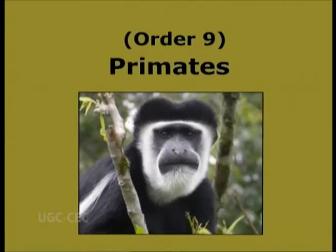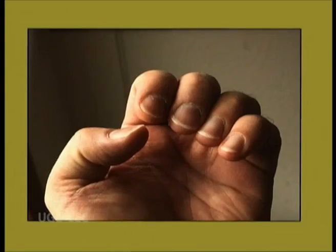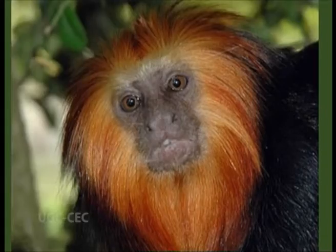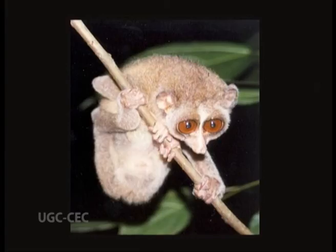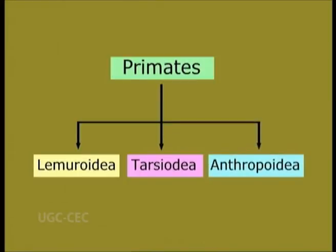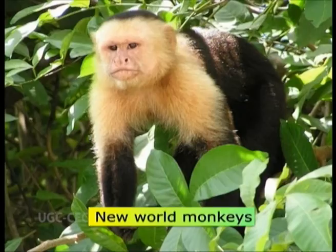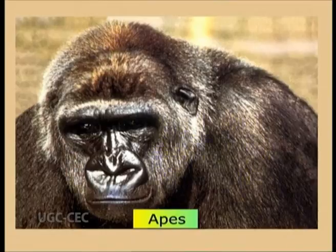Order 9: Primates. Primus meaning of the first rank. Generalized or primitive mammals except for the great development of brain. Flat nails on fingers and toes. First digit is usually opposable — an adaptation for grasping. Eyes are typically large and turned forward. They are mostly arboreal in habitat. Primates are divided into three suborders: Lemuroidea, Tarsioidea, and Anthropoidea. Examples are loris, old and new world monkeys, apes, humans, etc.